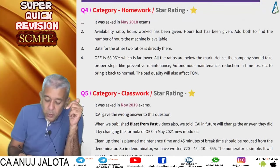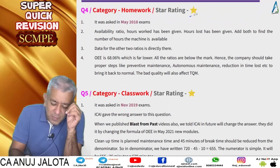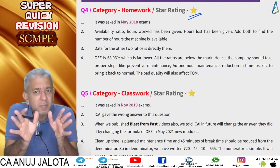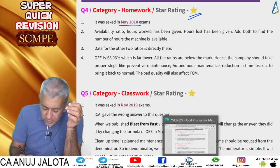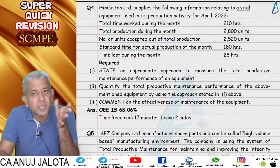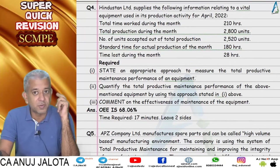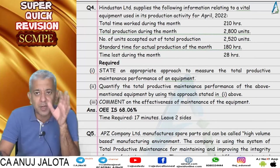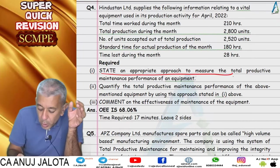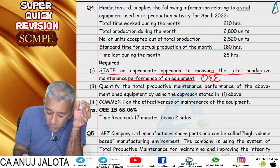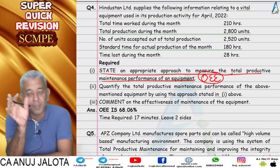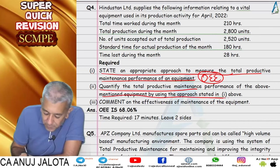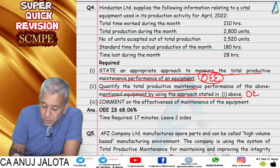Question 4 is a one-star easy question asked in May 2018 exams. It requires calculating OEE and commenting on it. First, write what OEE means and what Total Productive Maintenance means, state an appropriate approach to measure TPM, then quantify TPM of the equipment using that approach.